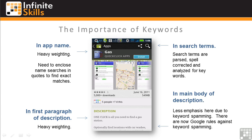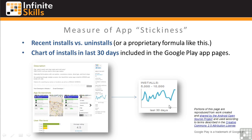Keywords aren't just important in the app name. Google now seems to be placing special importance on the first few lines or first paragraph of the description. Keywords are also important in the body of the description, but due to keyword spamming, Google seems to be placing less emphasis on them. Google has recently implemented a rules policy against keyword spamming. Google has also added a measure of app stickiness using a proprietary formula that measures recent installs versus uninstalls, which can be visualized using the recent installs chart on the web version of Google Play.